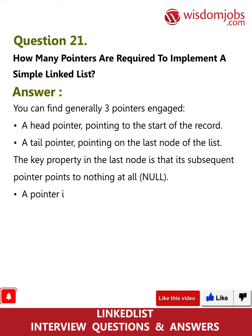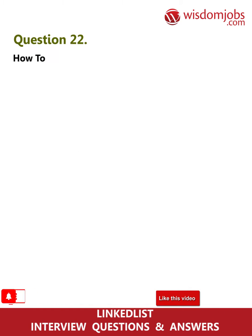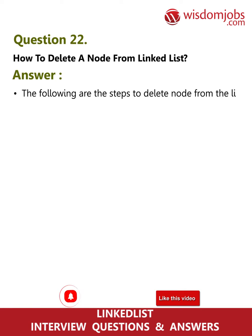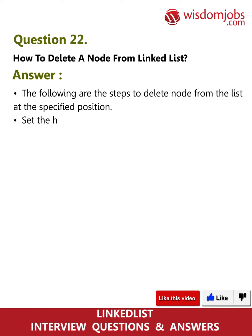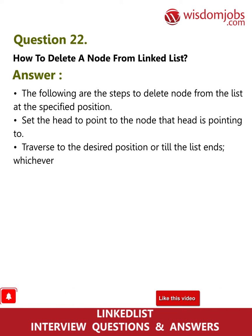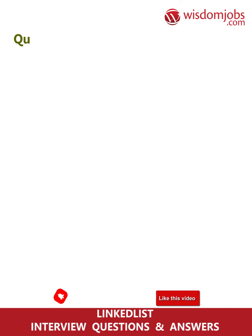Question 22: How to delete a node from a linked list? The steps to delete a node at a specified position are: set the head to point to the node that head is currently pointing to, traverse to the desired position or until the list ends, whichever comes first, then point the previous node to the next node.